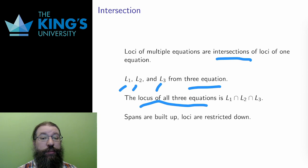This is going to be something smaller, since there are more restrictions. And it will be precisely the intersection of all three loci. The points that satisfy all three equations are exactly the points that are part of this locus, the intersection of all three, L1, L2, and L3.